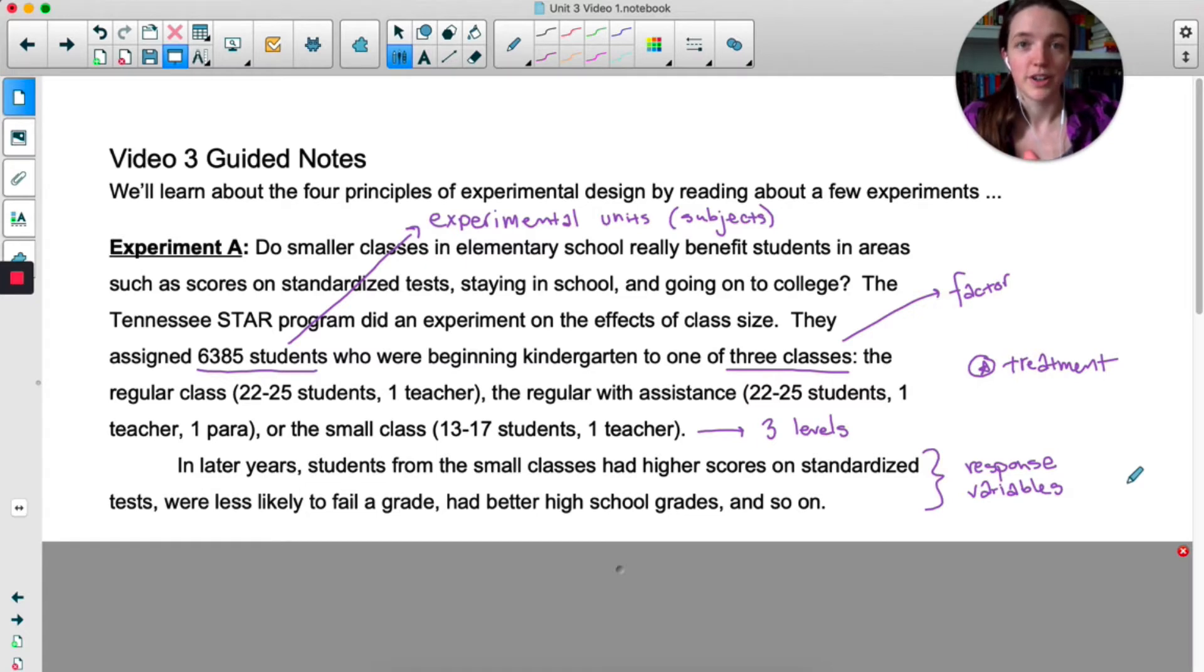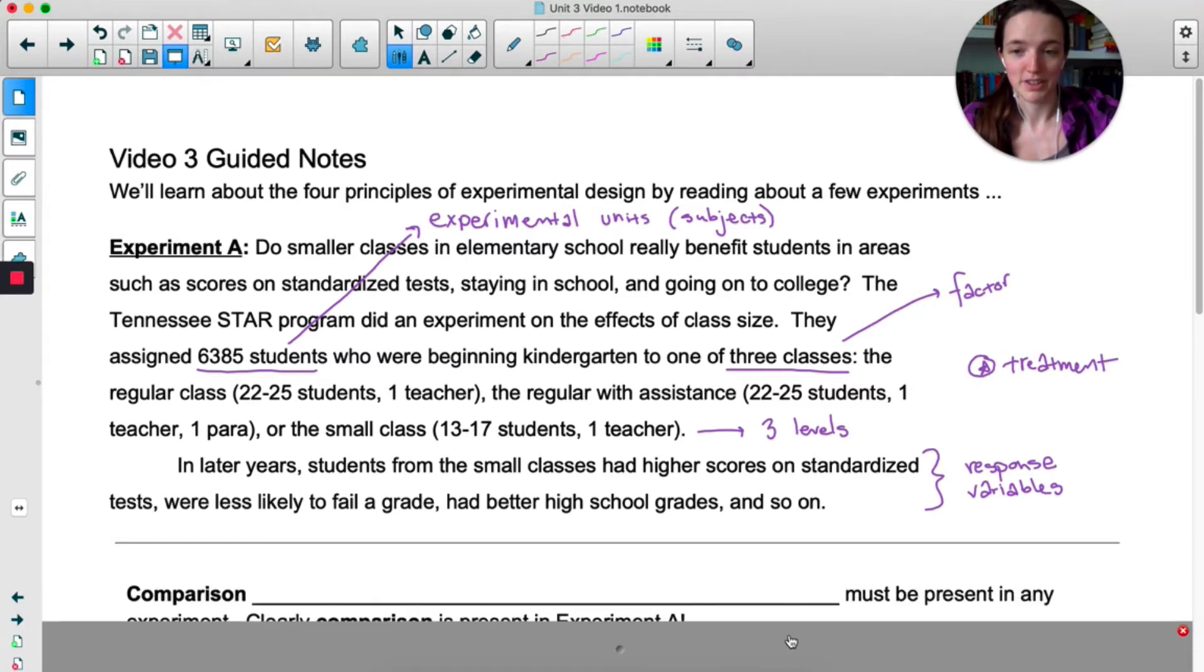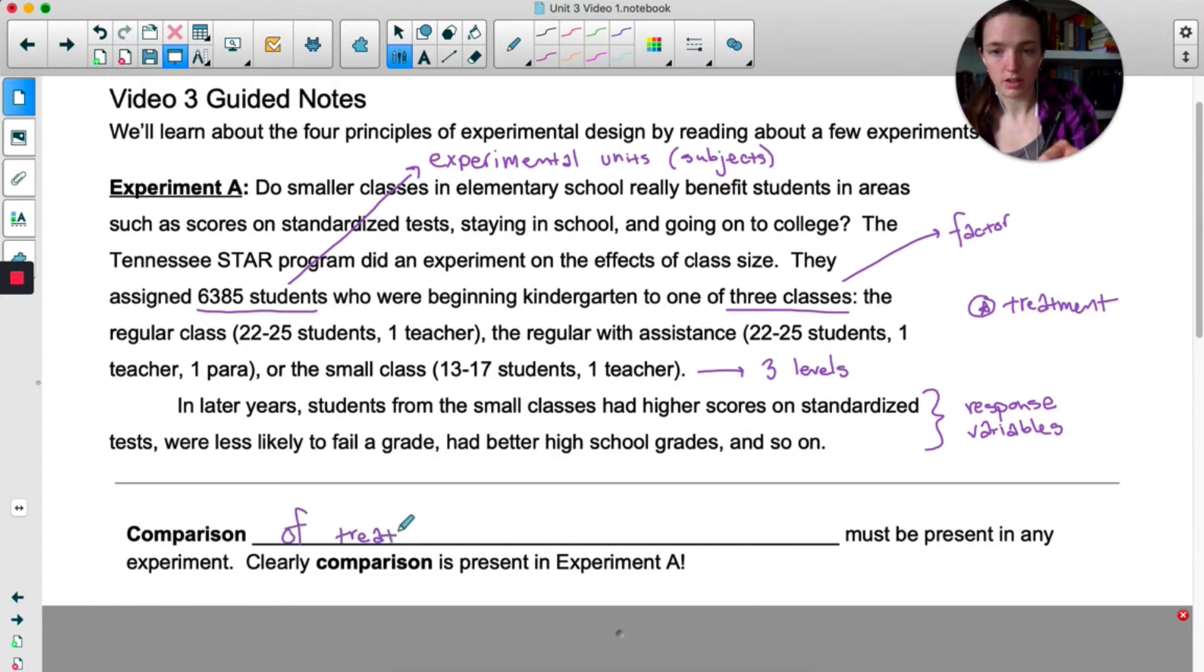So now let's take a look at the four principles of experimental design. The first one is comparison. Comparison of treatments must be present in any experiment. This one is so obvious that it wasn't in older versions of my textbook. They didn't mention it at all, but now the College Board mentions it. You have to be comparing. Otherwise, what's the point of doing the experiment? You have to be comparing at least two treatments. Clearly, there is comparison present in Experiment A.